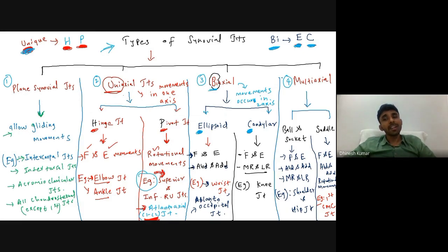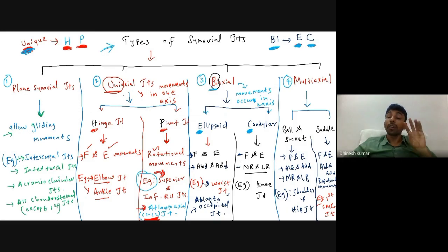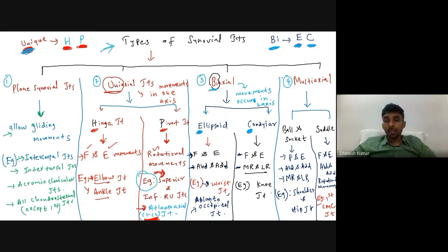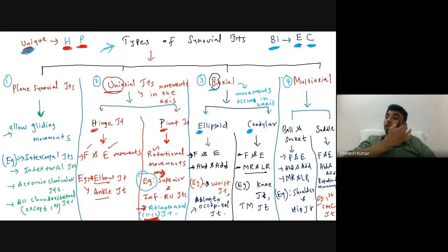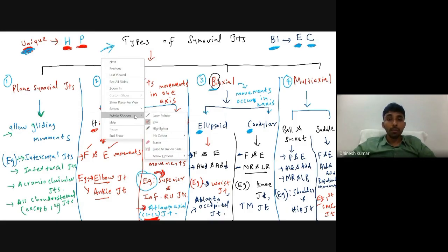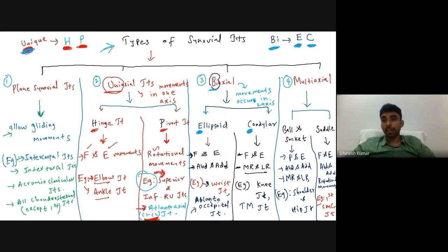Condylar joints are also biaxial, allowing flexion and extension as well as rotational movements (medial and lateral rotation). The two examples for condylar joints are the knee joint and the temporomandibular joint (between the temporal bone and the mandible).